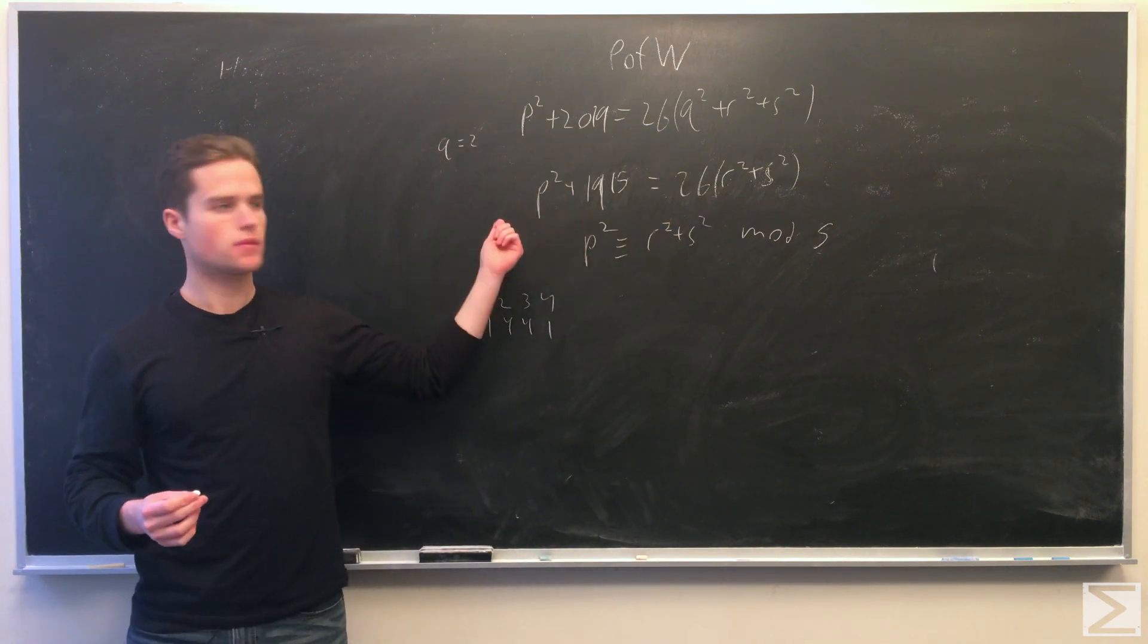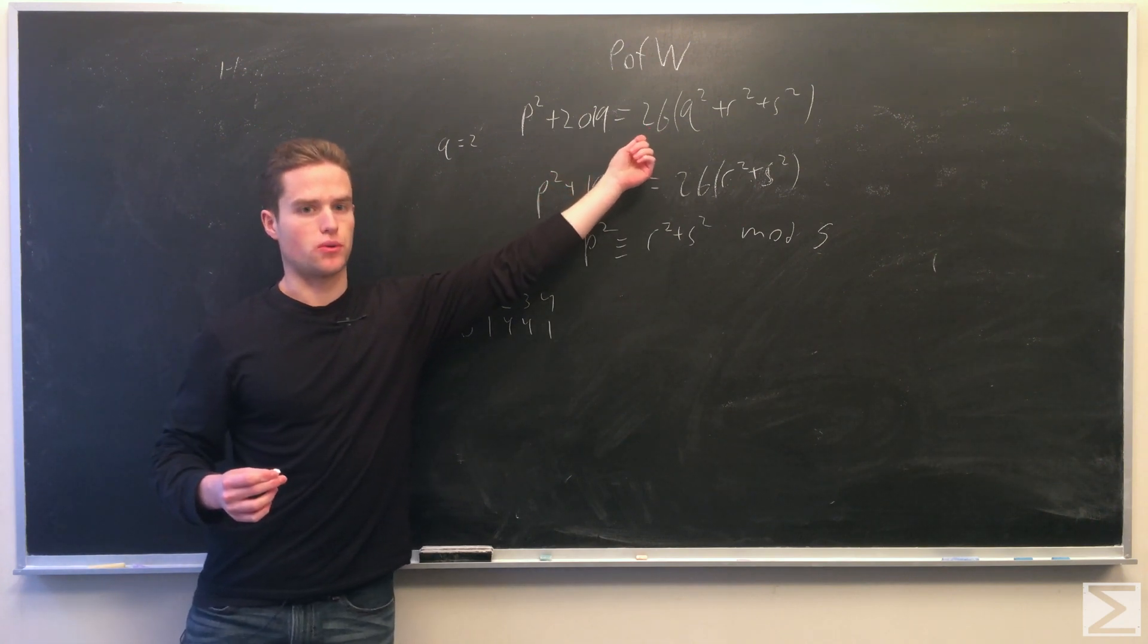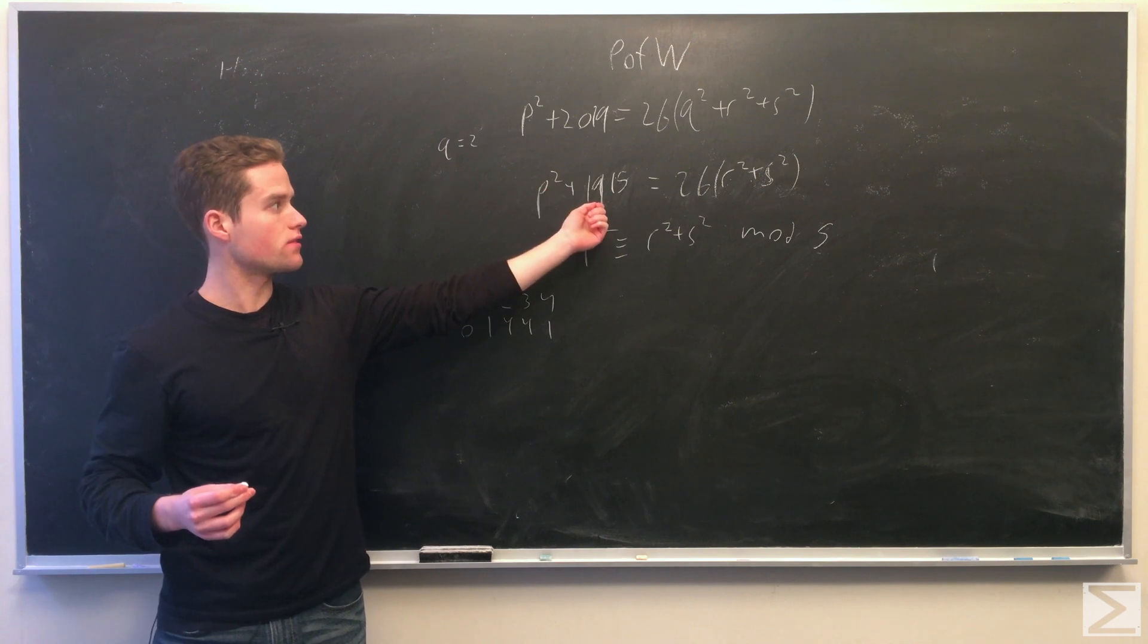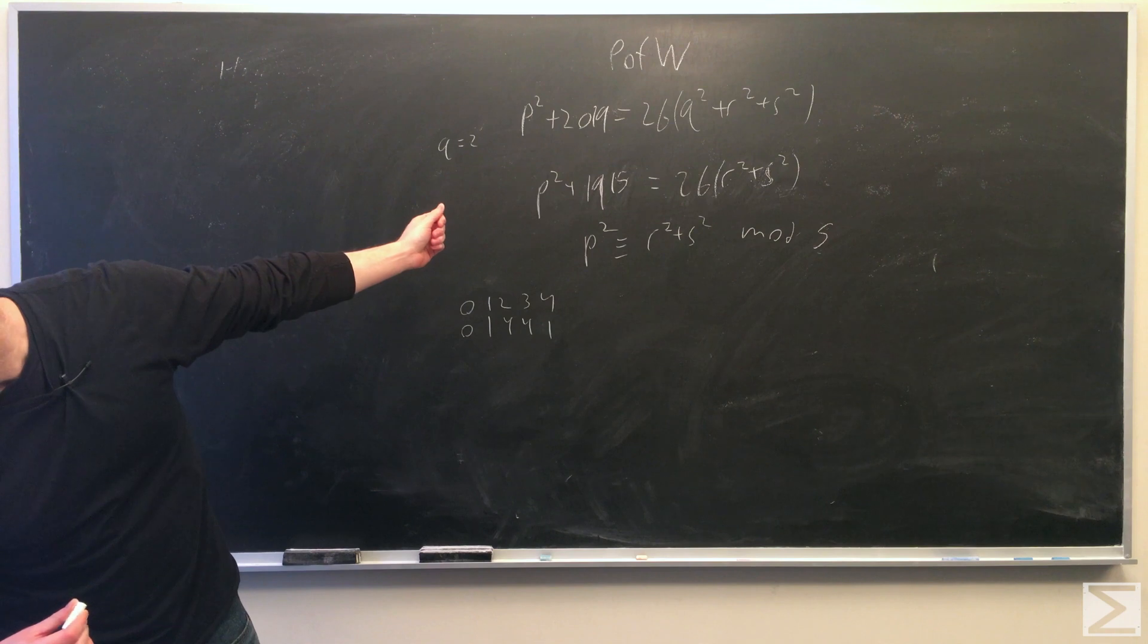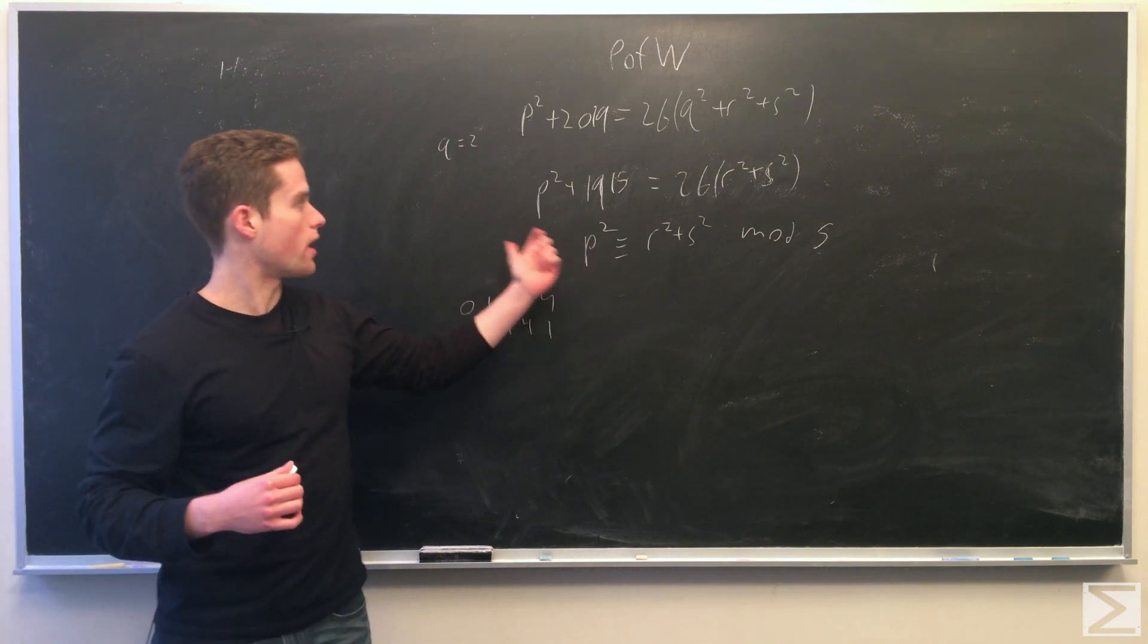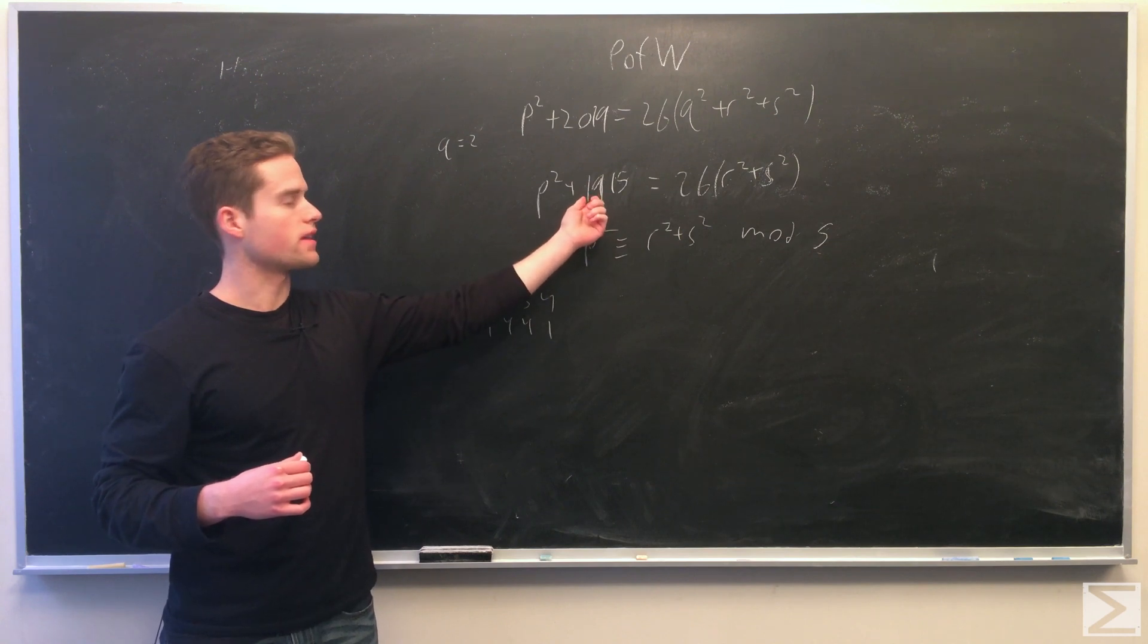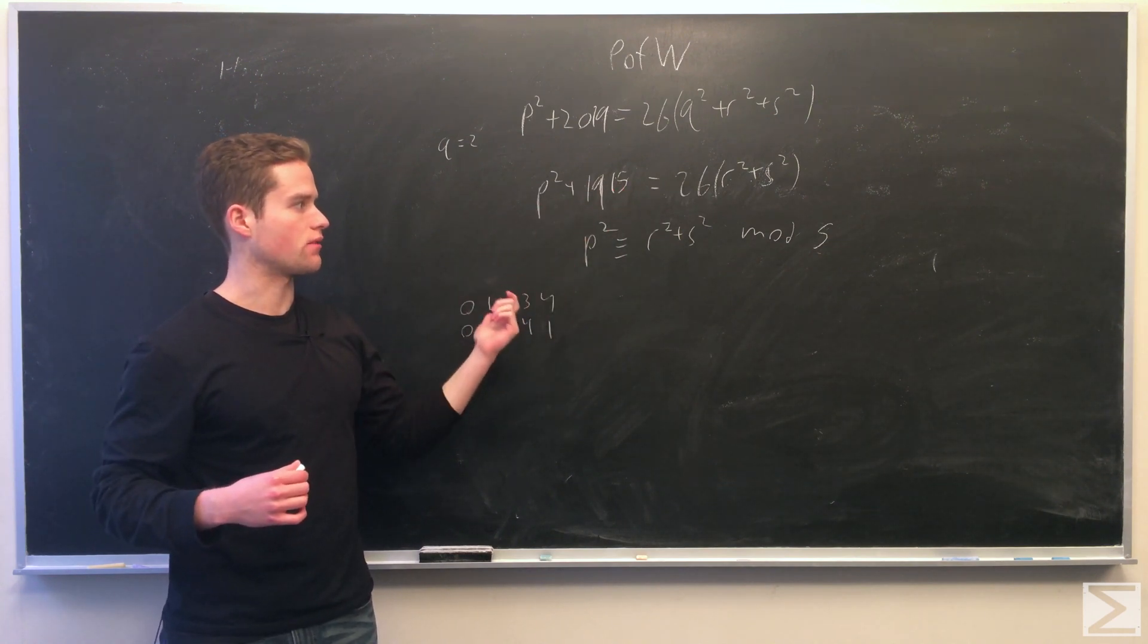Next we plug in q equals 2. We get 26 times 4 is 104. Subtract off that, we get p squared plus 1915 equals r squared plus s squared. Since 1915 ends in a five, it's divisible by five. So that suggests we take everything modulo five.